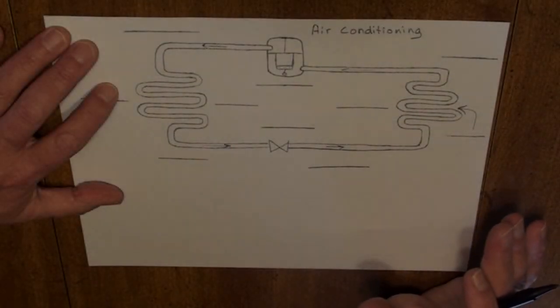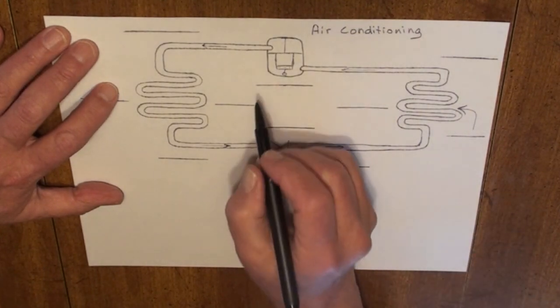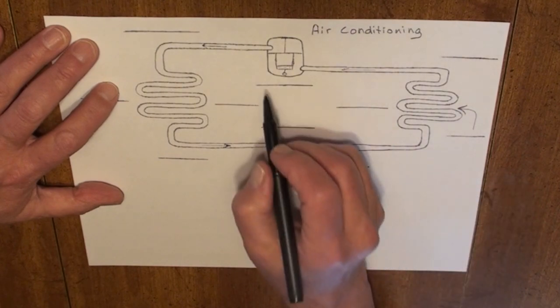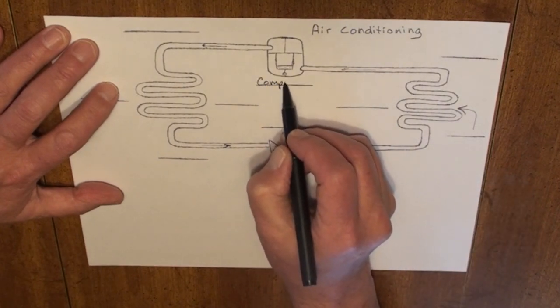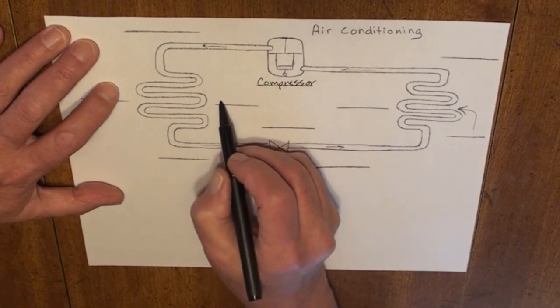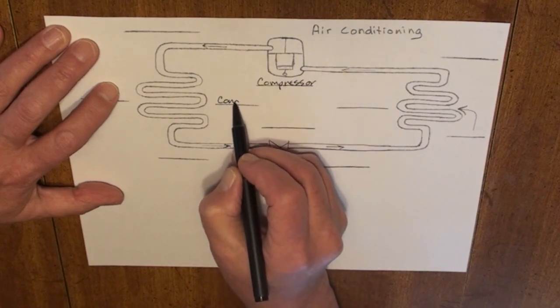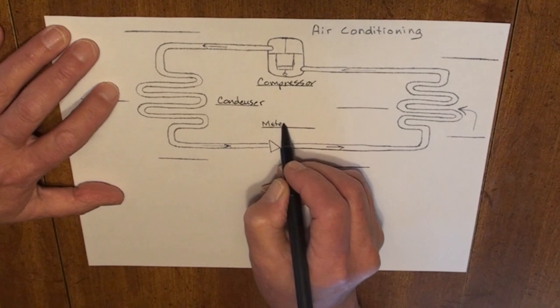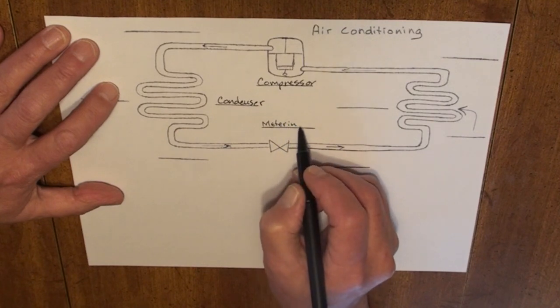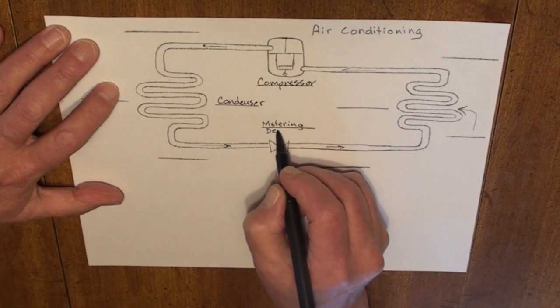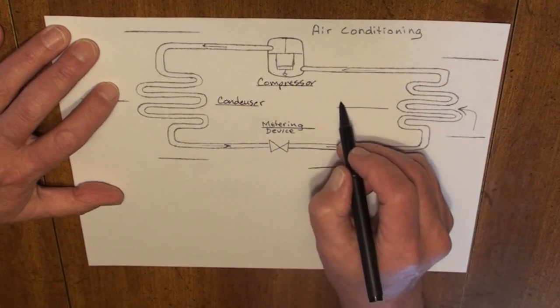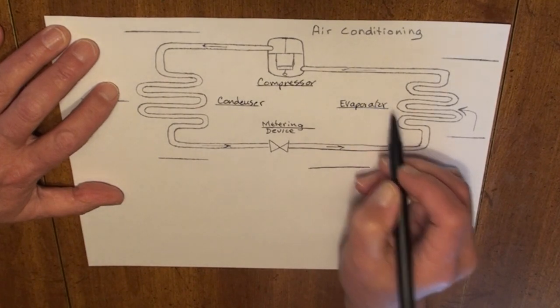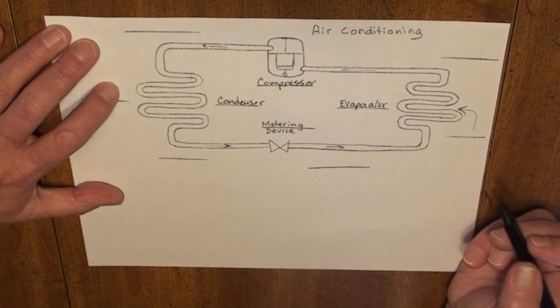Again, I'm going to use my basic refrigeration cycle diagram. We're going to have the same components that was involved in the tin sear. We have a compressor, a condenser, a metering device, an evaporator, four basic components.